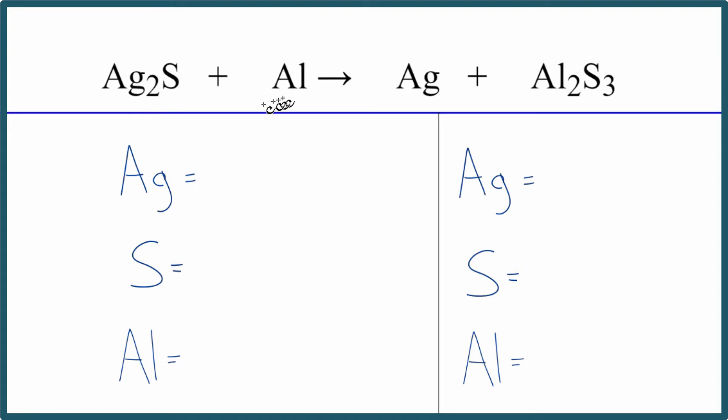In this case, the aluminum comes in and it pushes the silver out. So on the product side, we have silver all by itself, nice and shiny, and the aluminum is combined with the sulfur to make aluminum sulfide. So this is one way that you can clean tarnished silver.